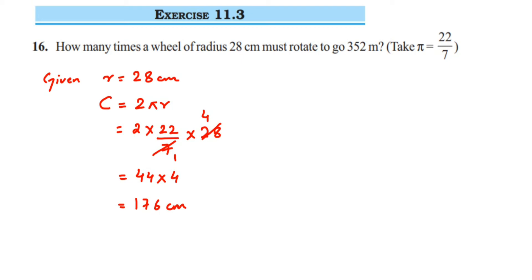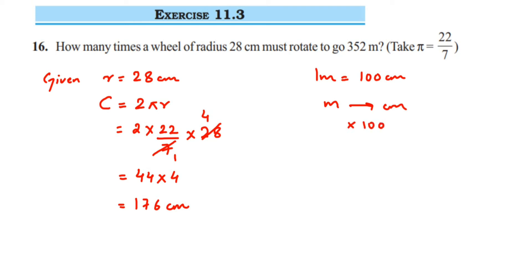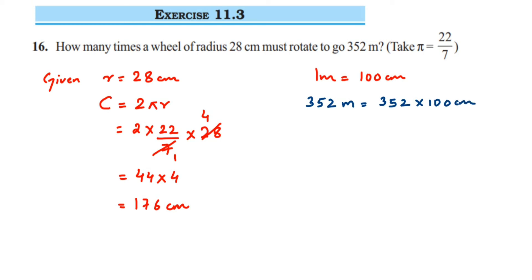The total distance given is 352 meters, but we got the circumference in centimeters. So we need to convert 352 meters into centimeters. Since 1 meter equals 100 centimeters, we multiply 352 by 100, giving us 35200 centimeters.